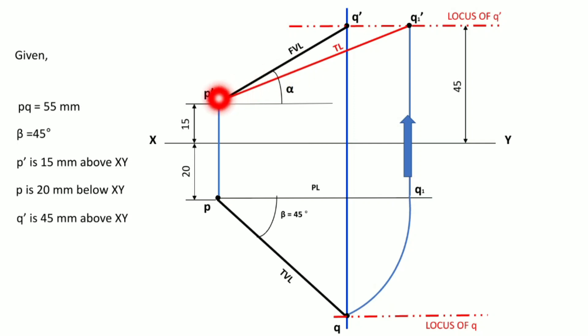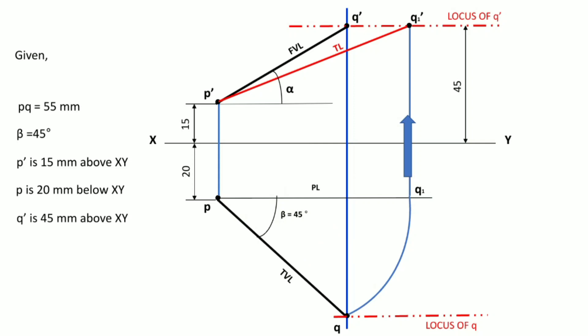Once you get the true length — that is, P-dash Q1-dash in the front view — keep this distance in a compass and draw the same distance in the top view from point P. Cut an arc from point P over the locus of point Q to get point Q2. Join Q2 with point P — that is the true length in the top view. Measure the inclination of the true length in front view and top view: that is theta and phi, which are the true inclinations of the line with HP and VP respectively.